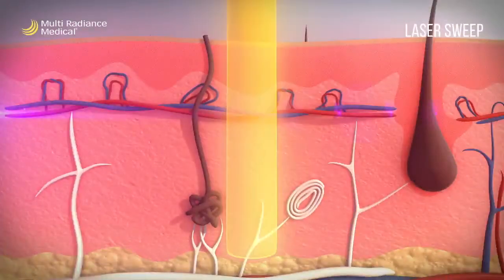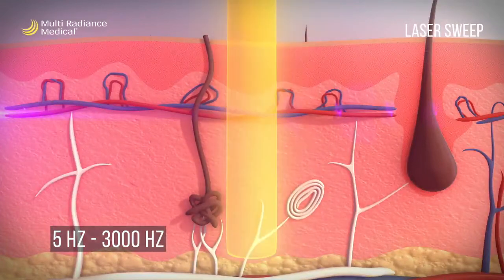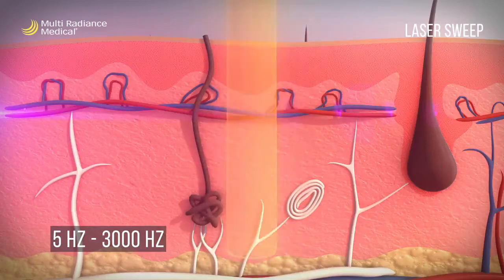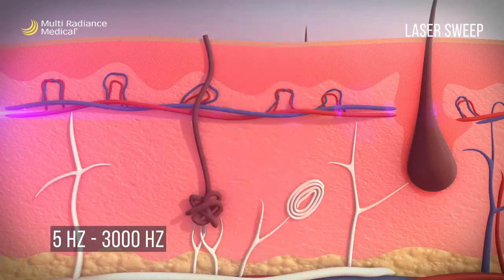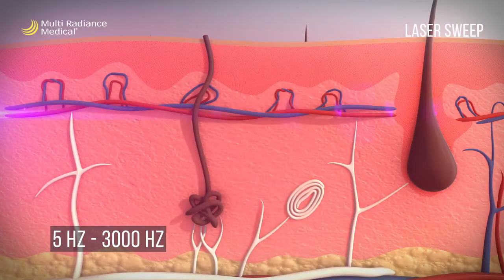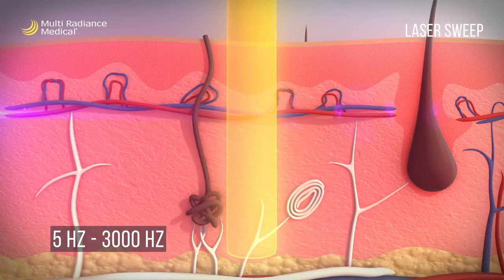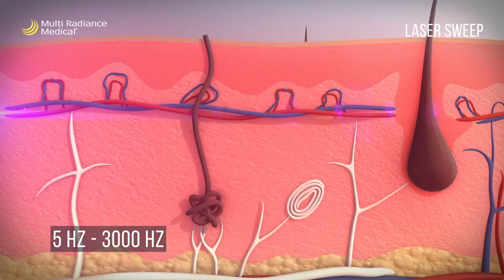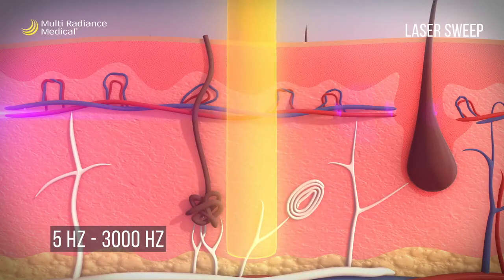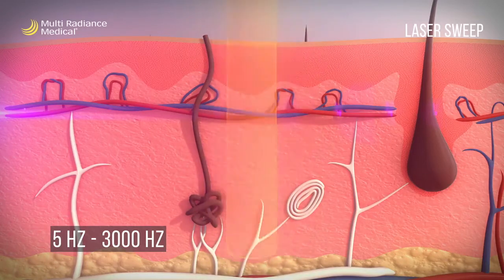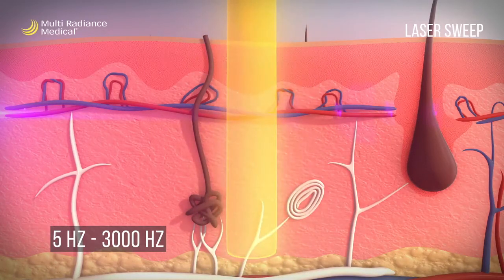The Multi Radiance proprietary technology laser sweep varies its frequency to prevent the tissue from adapting by utilizing a range of frequencies that sweep from highest to lowest during treatments. By varying the frequencies, each laser impulse effectively changes the laser's target depth of penetration. Such changes not only impact the depth of the energy but also the rate at which the energy is delivered. The combination of the variable depth and dose rate reduces risk of biological adaptation to treatments.